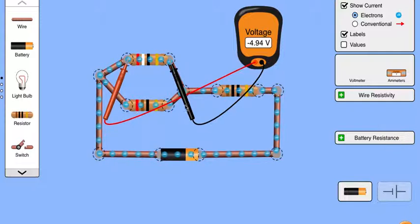And I get negative 4.94. So if I add up the voltages around this loop, I get zero. So it does indeed work. Everything's great, right?